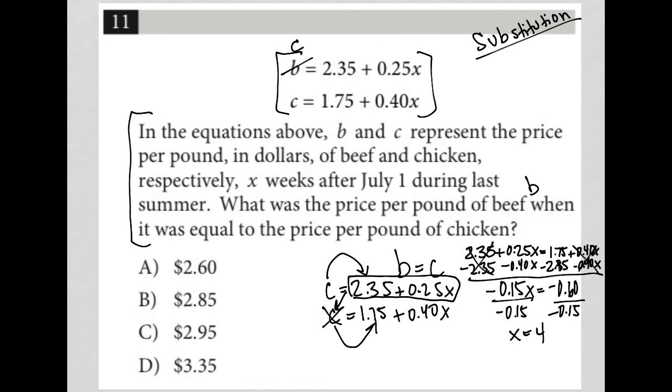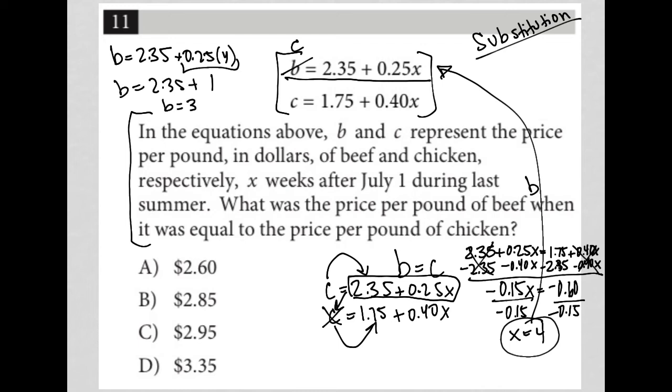Now x represents weeks, but the question asks for the price per pound of beef. Taking x = 4 and substituting into the beef equation: b = 2.35 + 0.25(4) = 2.35 + 1 = 3.35. Therefore b = $3.35, and the answer is choice D.